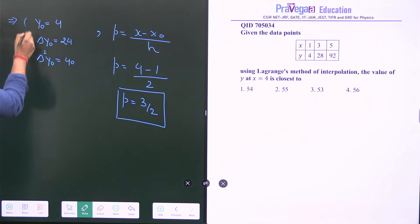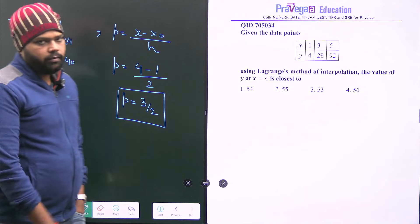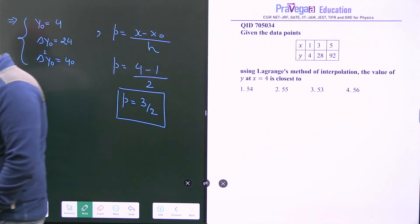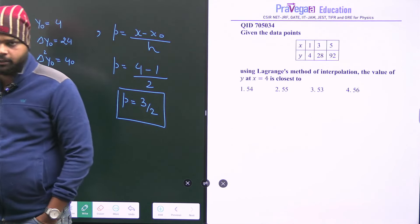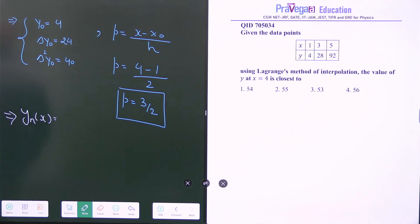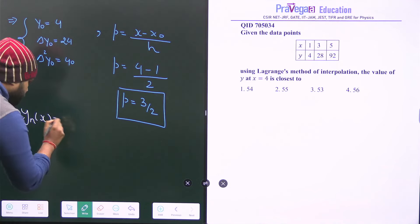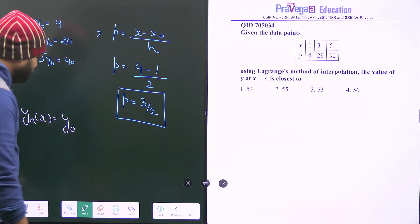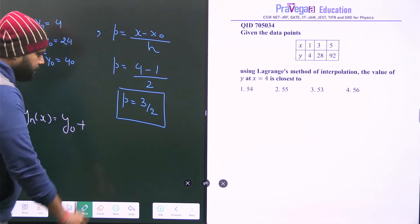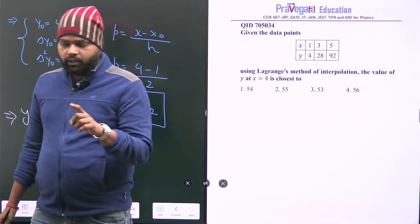And we have this data also. Now directly use the Newton's forward difference method relation, and this is given as y at x. And this is equals to y0 plus P times delta y0.